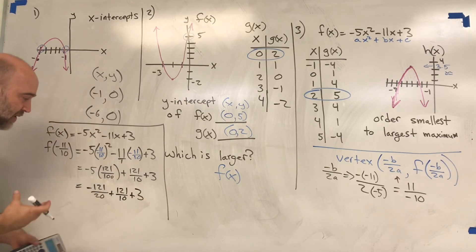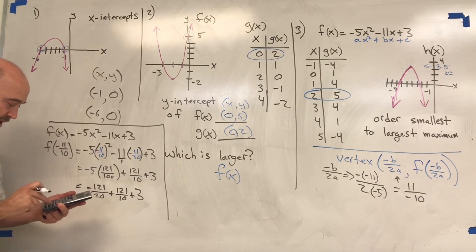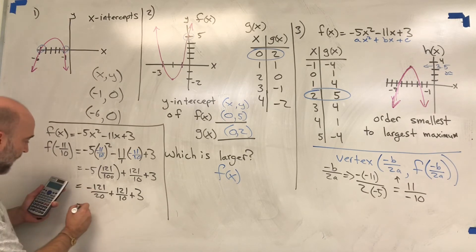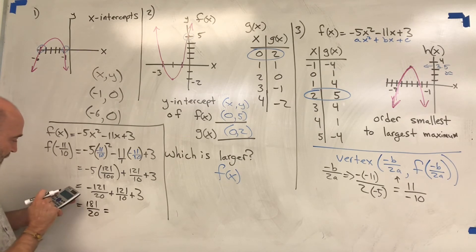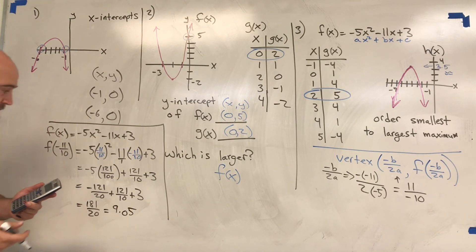Hopefully we're allowed to use a calculator on this one. So -121 divided by 20 plus 121 divided by 10 plus 3, and I get 181/20, which is the same as 9.05.